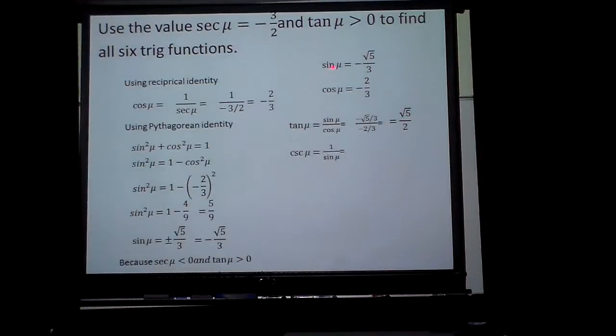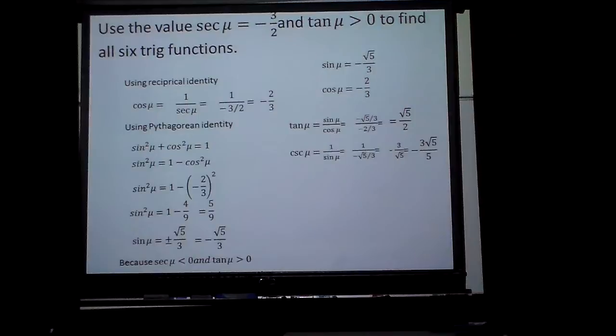Cosecant is just 1 over sine. I'm going to reciprocate that one, and I'll have to rationalize it. So, I have negative 3 square roots of 5 over 5. Secant was given to me.